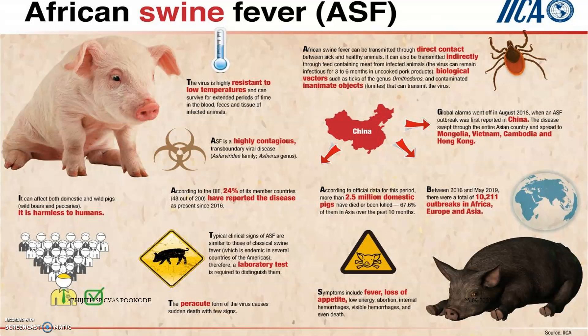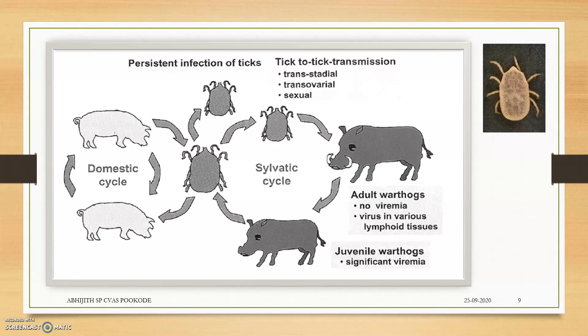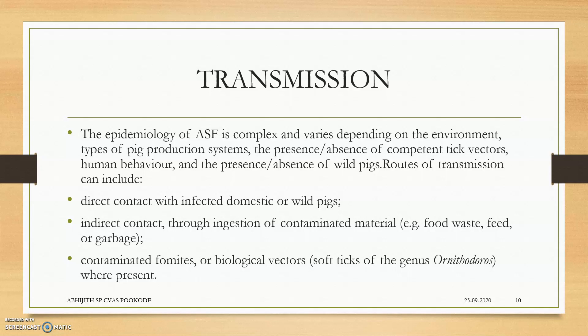The virus is highly resistant to low temperatures and is highly contagious. Transmission occurs through direct contact with infected pigs, by indirect contact, through biological vectors, or through fomites — that is why we call it a contagious disease.